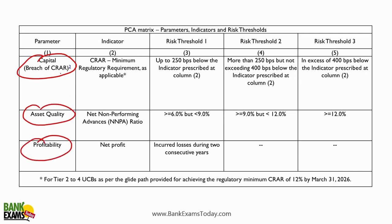The capital parameter indicator is CRAR - capital to risk weighted asset ratio. For Tier 2 to Tier 4, the minimum CRAR is 12%. If the CRAR is 250 basis points below 12%, it will be under the Risk Threshold 1.